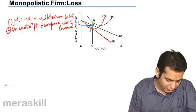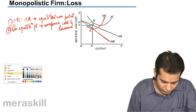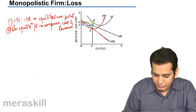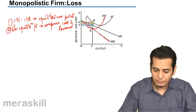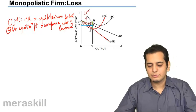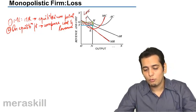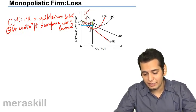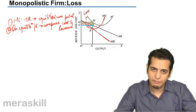So, the rectangle that you get will give you the amount of losses that you have incurred. This is the amount of loss that you have incurred. Now, why is this the amount of loss? It's because your cost is more than your revenue. You can see your average cost curve is higher at the equilibrium point than the average revenue curve.